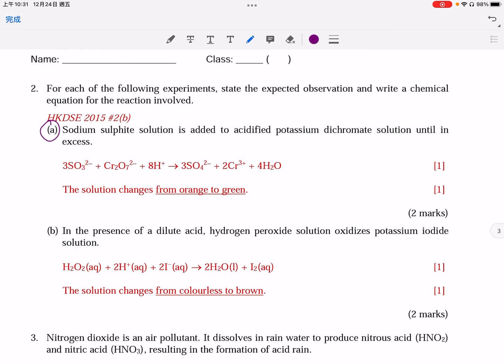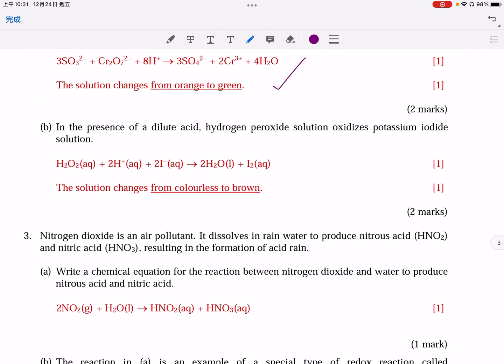Question number 2A is very straightforward. Actually, during lessons, I train you a lot. So, I suggest not to discuss it in details. Instead, I spend more time on B. This is unfamiliar. Hydrogen peroxide solution, oxidized potassium iodide solution. So, first of all, you need to know that iodide becoming iodine is familiar to you. Let us write the equation first. Iodide becoming iodine.